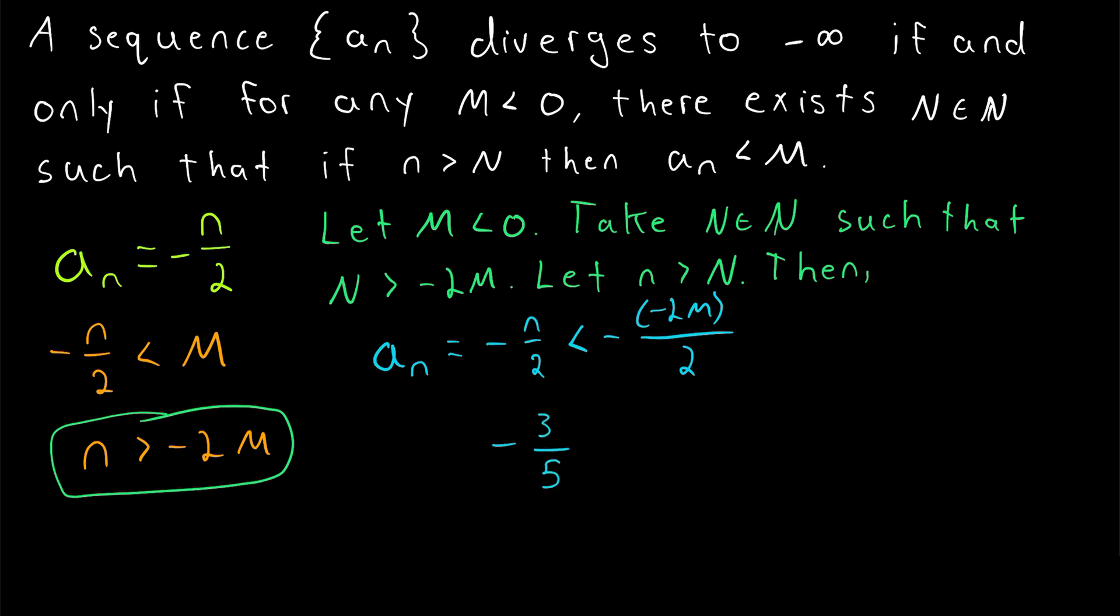imagine the fraction negative 3 fifths. This is less than the fraction negative 1 fifth. So that's all we've done. We've replaced the numerator with a numerator that has a smaller magnitude.